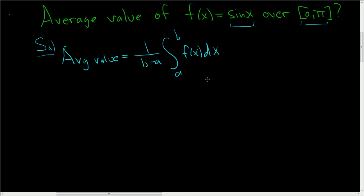So in this case, in our problem, a is 0, b is pi, and f of x is sine x. So all we have to do is use the formula. It's really easy.